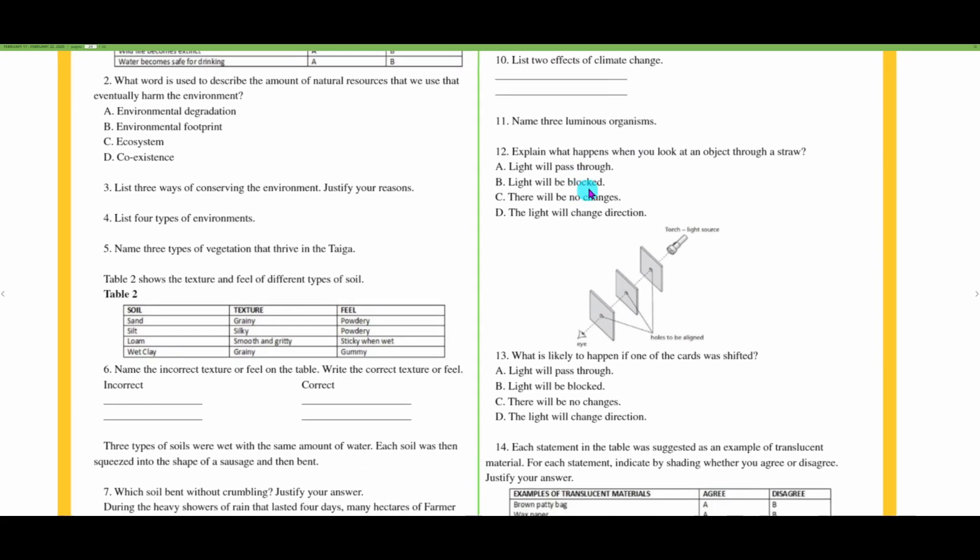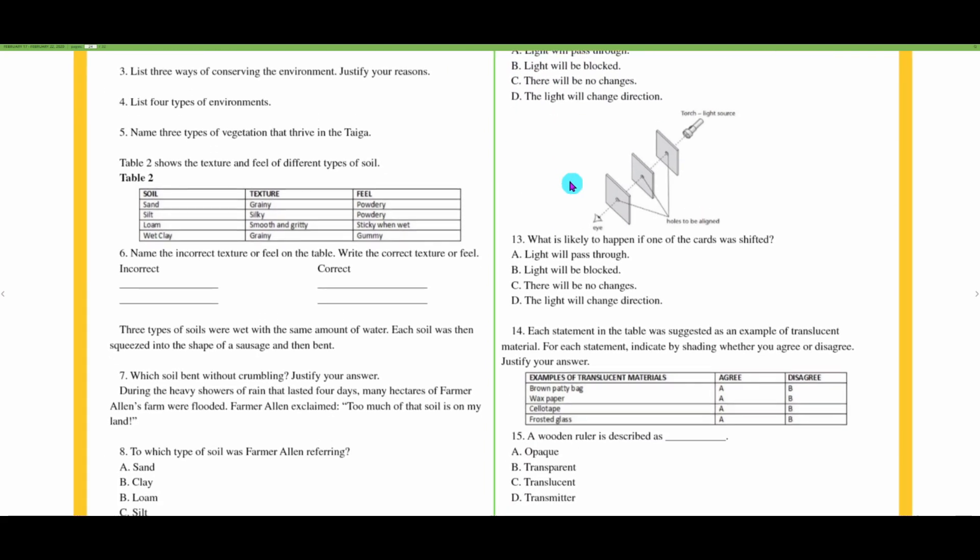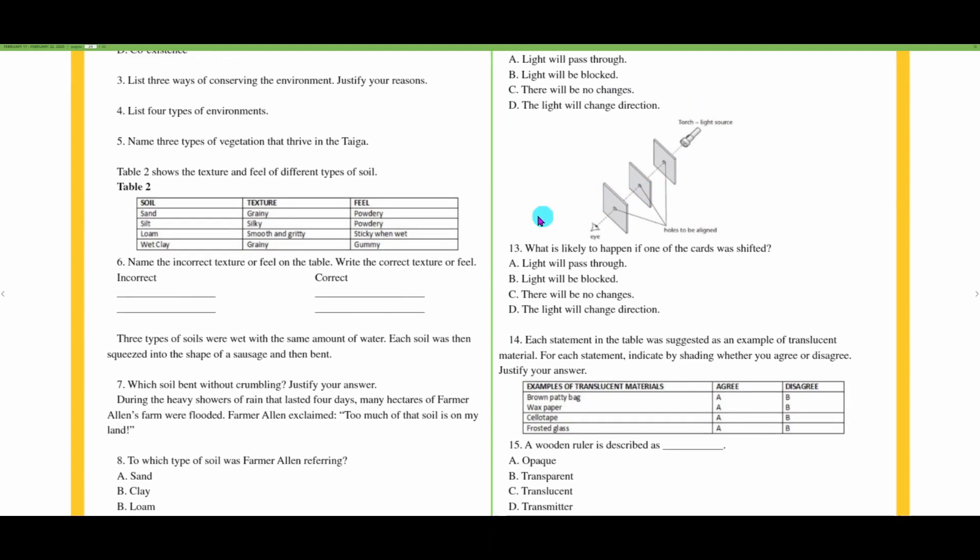Number twelve: explain what happens when you look at an object through a straw. I'm going to assume the straw is not blocked by anything and that the straw is not bent in any way. So light will pass through, light will be blocked, there will be no changes, or the light will change direction. I will say light will pass through. I would have preferred if they had a diagram like they have for 13.